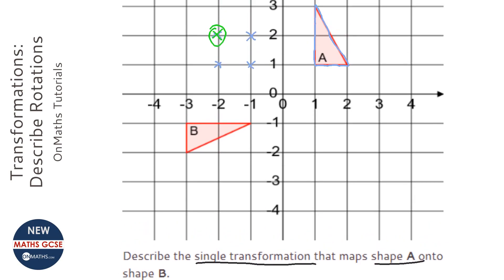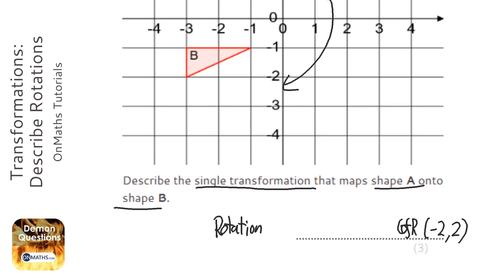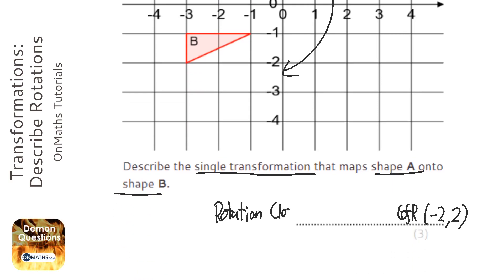But we need the direction. So I move the tracing paper this way, which is clockwise, and it was a quarter turn, which is 90 degrees. So you look out for clockwise 90 degrees, anti-clockwise 90 degrees, or just 180 degrees, and you don't need the direction for 180 degrees.